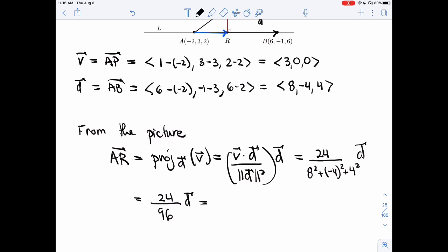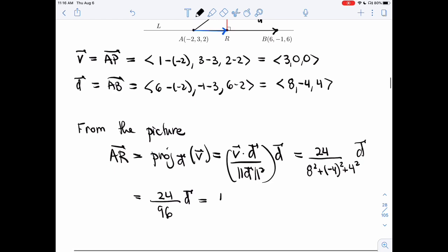And so that's 1 fourth. So 1 fourth of D. And so I get 2, minus 1, 1. That's my vector AR.